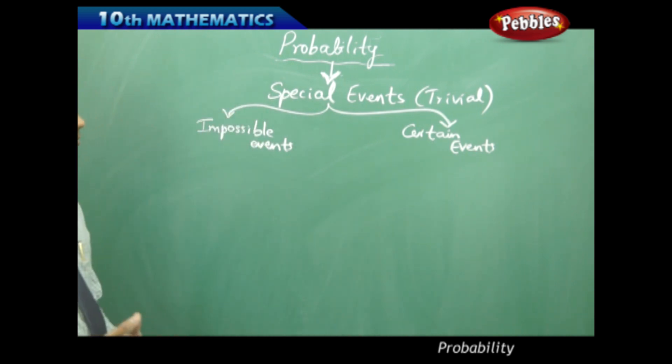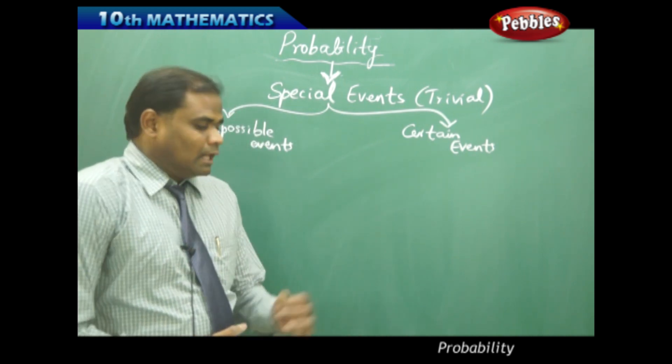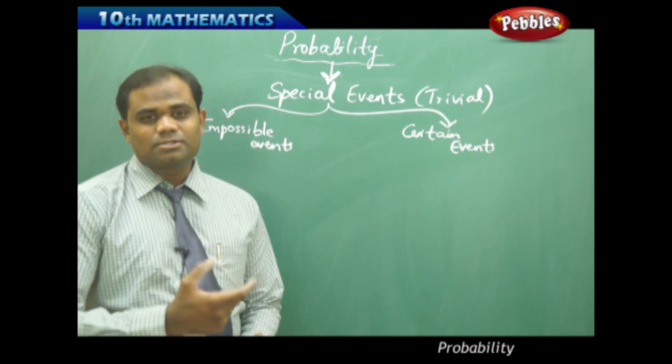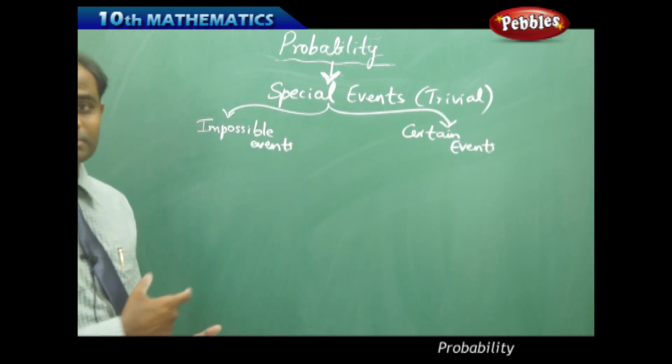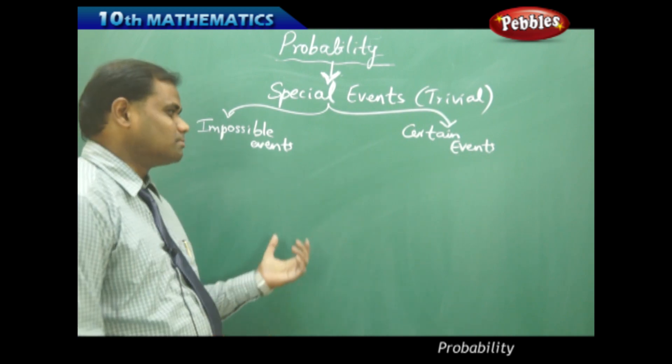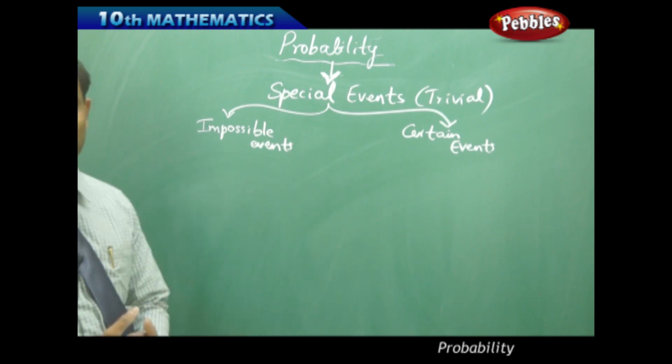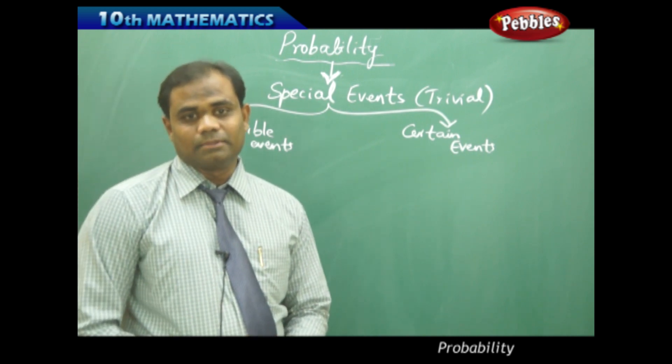What is special about impossible events? When I take a situational problem, if there is impossibility, if it is impossible to find the probability, then we call that as impossible or certain. Let's understand the definitions through more exclusive examples.